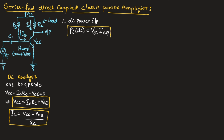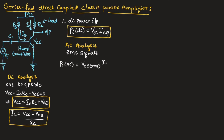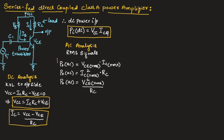Now let us understand the AC analysis in terms of RMS signal. The output AC power can be written as P0_AC equal to VCE_RMS into IC_RMS. We can also write output power in terms of current and resistance as P0_AC equal to IC²_RMS into RC, and in terms of voltage and resistance as P0_AC equal to VCE²_RMS divided by RC.